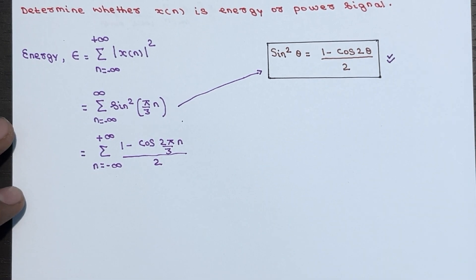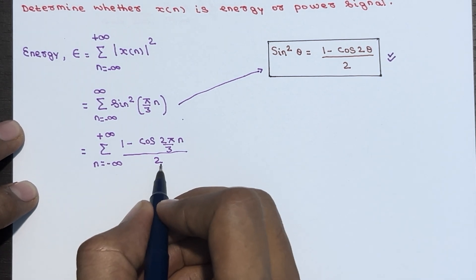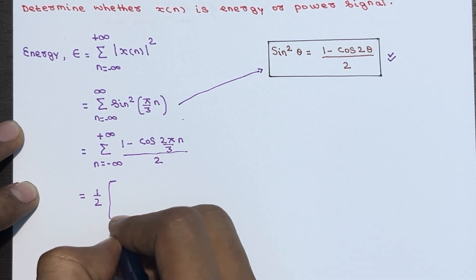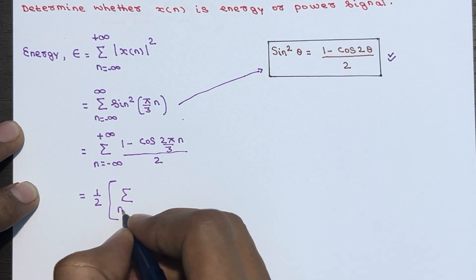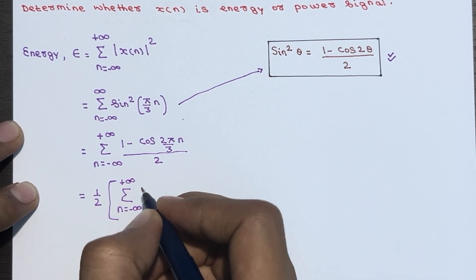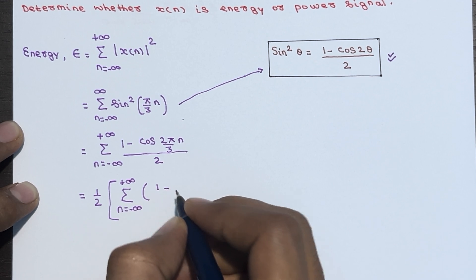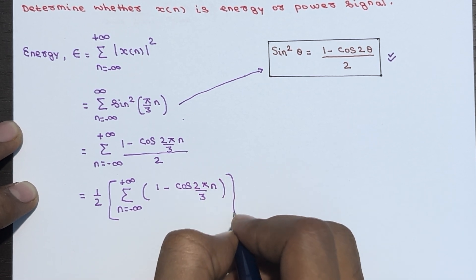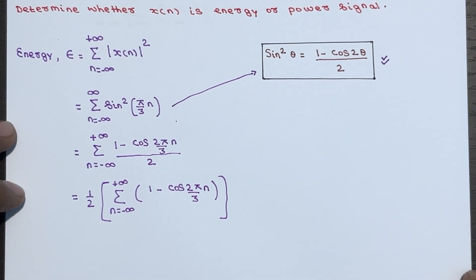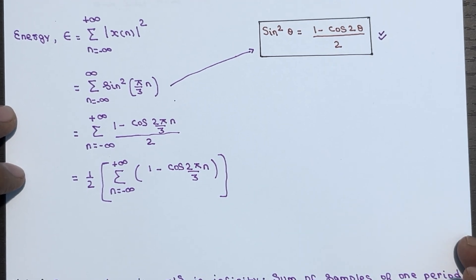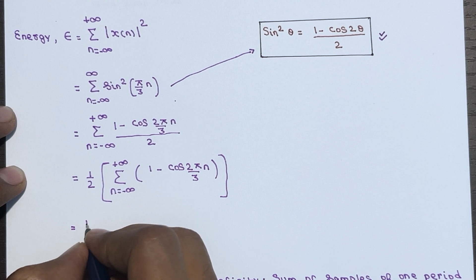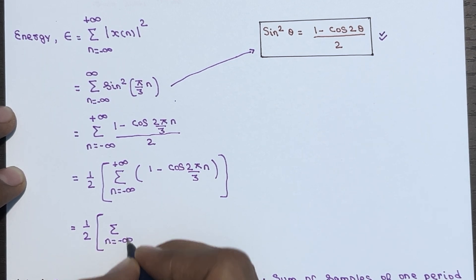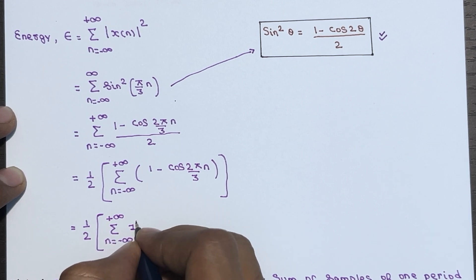Taking 1/2 outside, it becomes (1/2) · summation from n = −∞ to +∞ of [1 − cos(2π/3 · n)]. We split this into two parts: (1/2) times [summation of 1^n minus summation of cos(2π/3 · n)], both over n = −∞ to +∞.